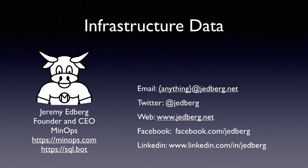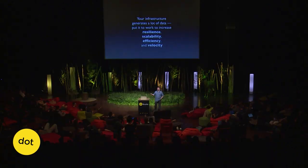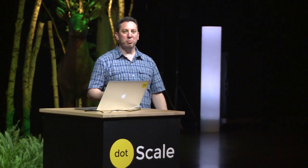My name is Jeremy, and I'm here today to talk to you about infrastructure data. Infrastructure data is basically the data that is generated by your infrastructure. As you automate your infrastructure, the speed of this generation increases. I want to talk about how you can use it to increase your resilience, scalability, efficiency, and velocity when you analyze it correctly. This whole talk is about finding the right data and presenting it the right way so you can do useful things that build better systems.